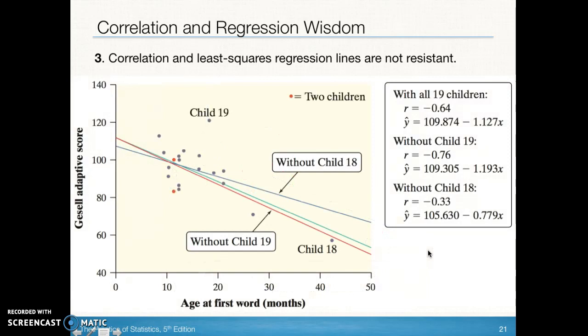With all 19 children our r is negative 0.64. When we take away child 19 which is off the pattern, you can see it strengthens our r value. Without child 19 we have a stronger r value and when we take away child 18 we have a much weaker r value. Just pay attention, our lines aren't super different but the values of r are definitely different and one thing you need to make a note of is how different the slopes are. When you take away a specific point, be able to have a prediction of what's going to happen to one end of the line or the other.